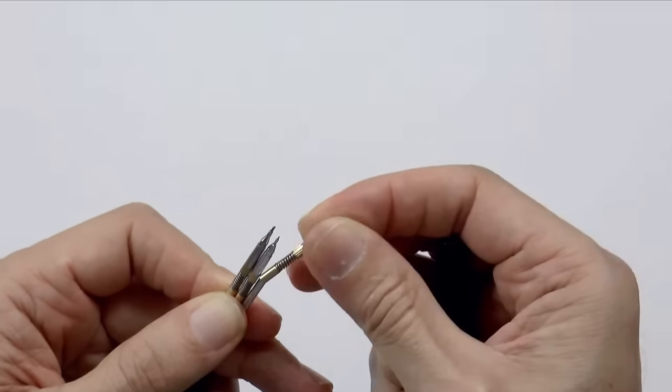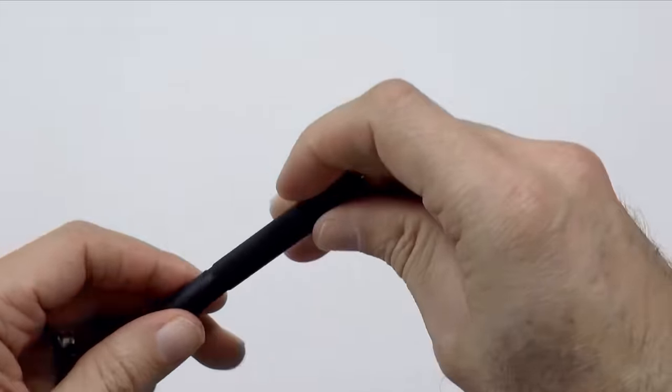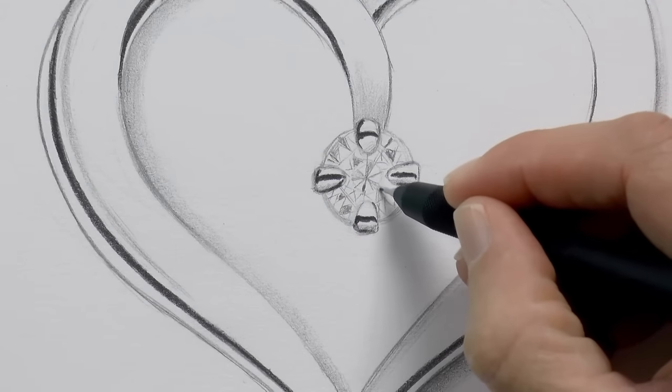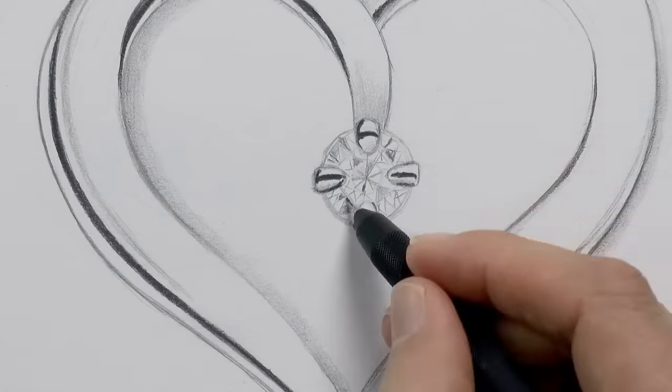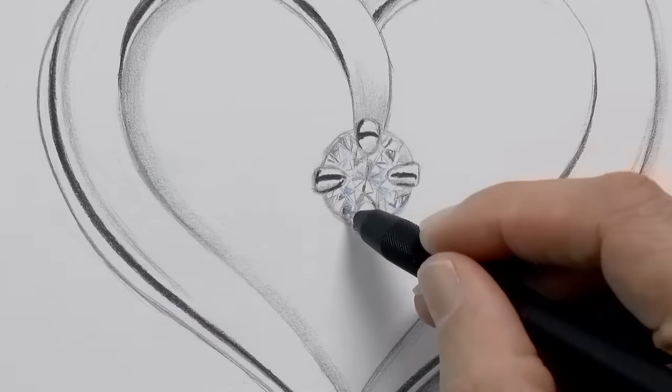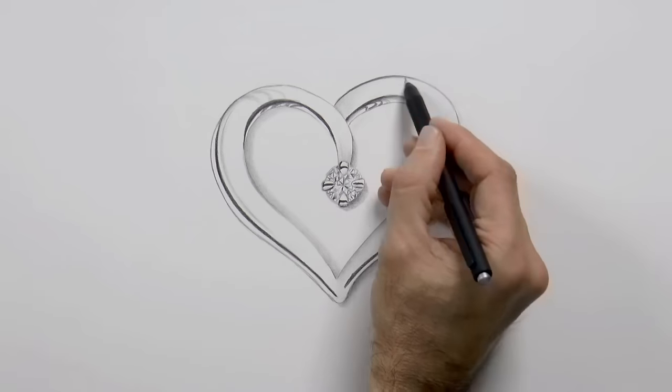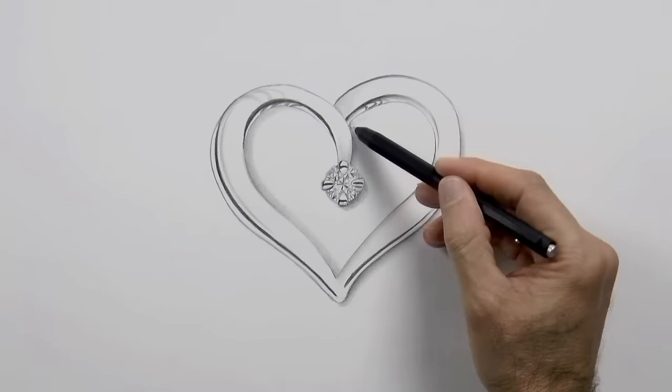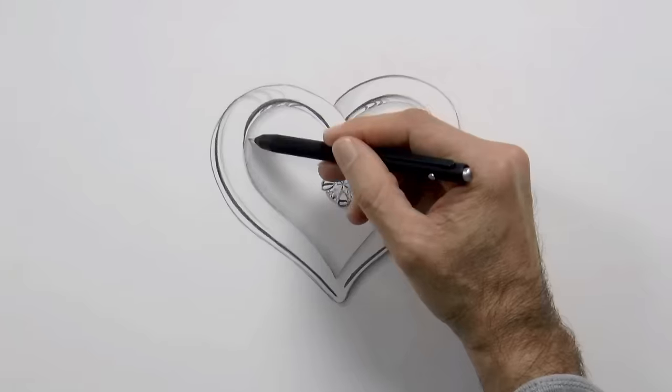This because I want to give slight blueish reflections to the diamond. They will not be very obvious, it's just a slight touch. We mix some of the blue with the graphite. Shiny surfaces have very contrasting tones. That is very light lights and very dark blacks.